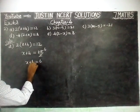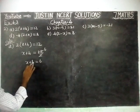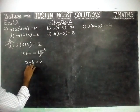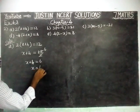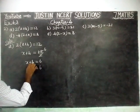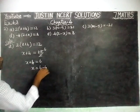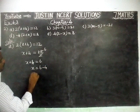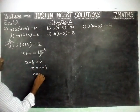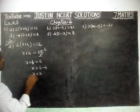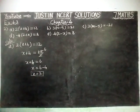x plus 4 is equal to 6. Now I am going to take this plus 4 to the right hand side. So x is equal to 6 minus 4, which is equal to 2. So the value of x is equal to 2.